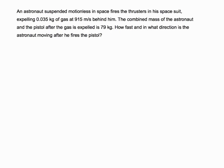And he fires the thrusters in his space suit, which puts out 0.035 kilograms of gas at a velocity of 915 meters per second behind him. You're given the mass of the astronaut after the gas is expelled, and you're asked how fast and in what direction is the astronaut moving after he fires his thrusters.